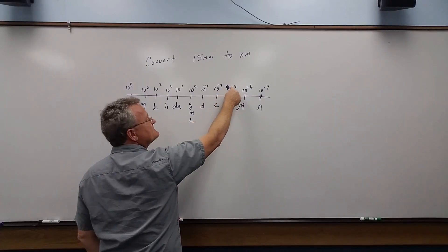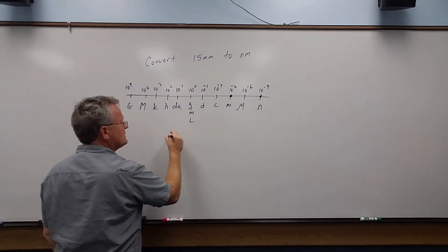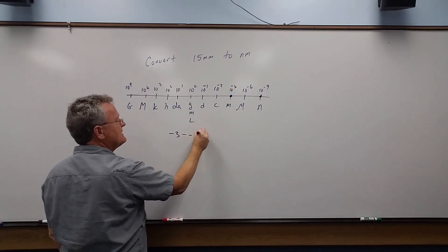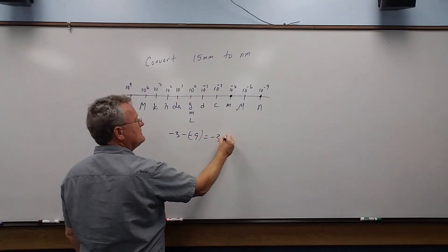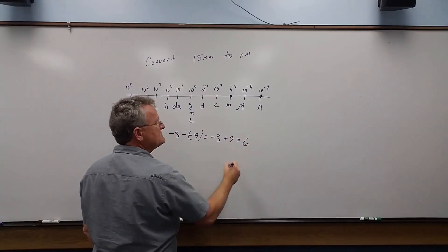Minus three minus a minus nine. Minus three plus nine is six.